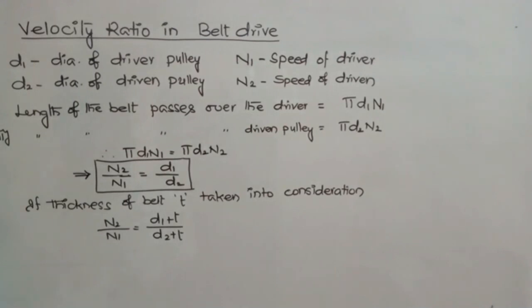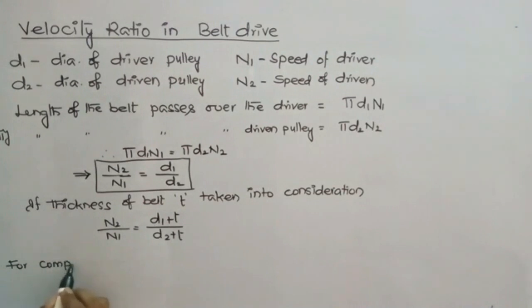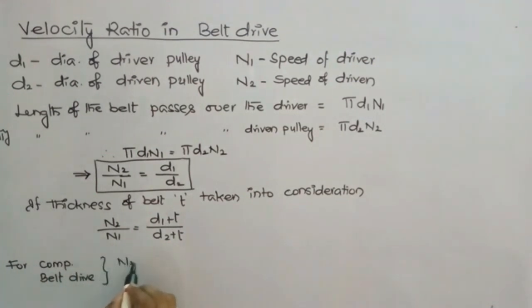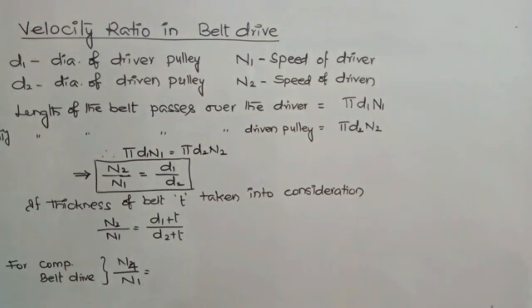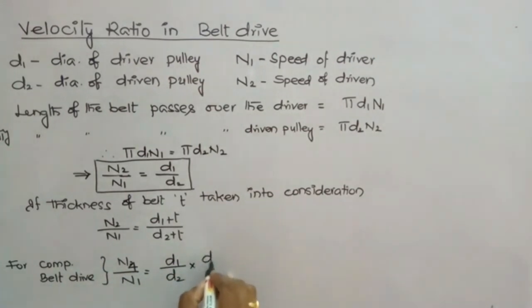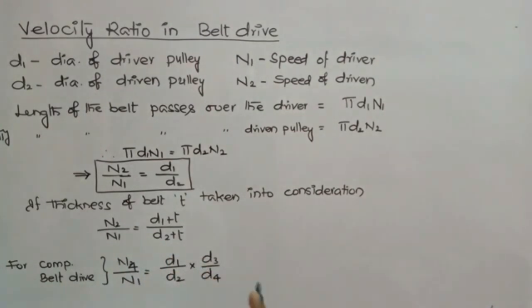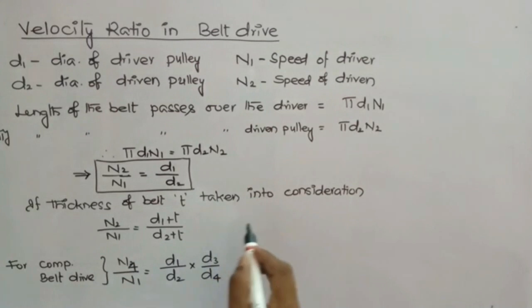When there are combinations of drivers and driven members, the velocity ratio can also be expressed in a similar fashion. In the case of a compound belt drive, N4/N1 = (d1/d2) × (d3/d4) — that is, the product of the diameters of the drivers divided by the product of the diameters of the driven members.